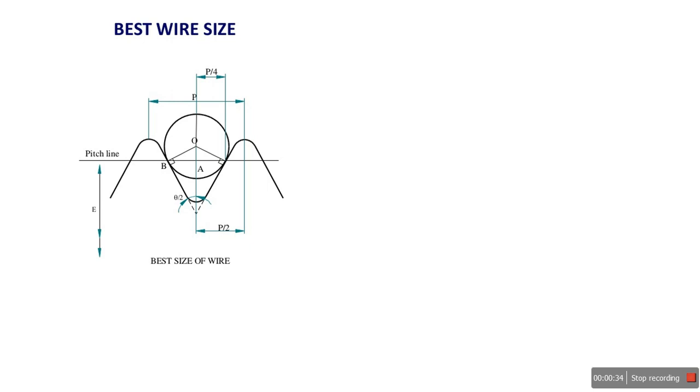Generally we prefer the three wire method because when we hold the component against the micrometer anvil, when we increase the number of wires, we can get proper grip and can align the screw thread properly between them. So we prefer the three wire method.